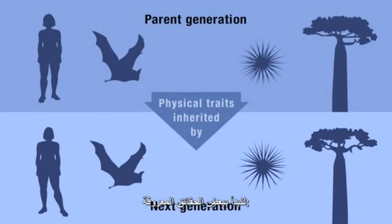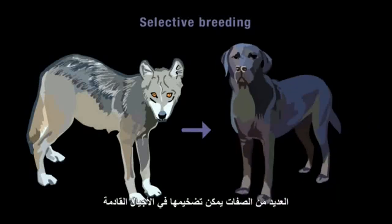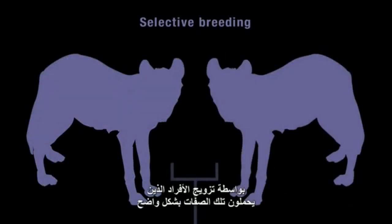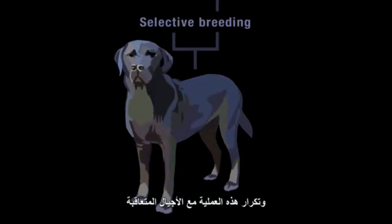To start with some well-known facts, we know that physical traits of parent lifeforms are inherited by the next generation, and that through the artificial process of selective breeding, many traits can be exaggerated in later generations. This can be achieved fairly simply by mating together individuals that exhibit those traits most strongly, and repeating this process with successive generations.